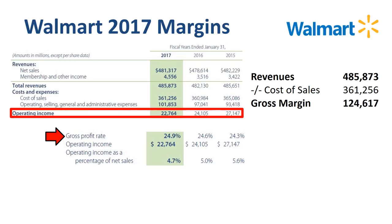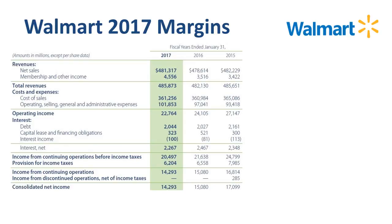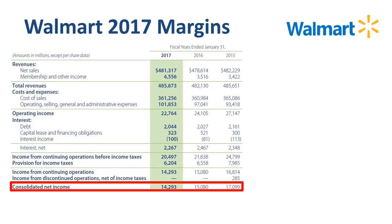While gross profit is rising, operating income as a percentage of net sales has declined. The management discussion and analysis clarifies that operating expenses have gone up primarily due to an increase in wage expense at the Walmart US and Sam's Club segments. The third ratio to calculate is Return on Sales, which is net income divided by revenue: 3.5% in 2015, 3.1% in 2016, and 2.9% in 2017 — a decline following a similar pattern as operating income.